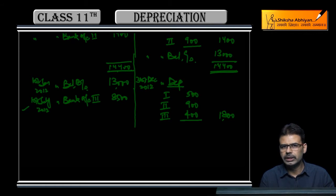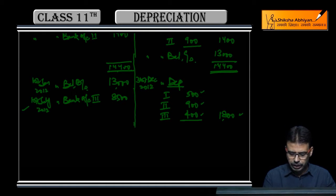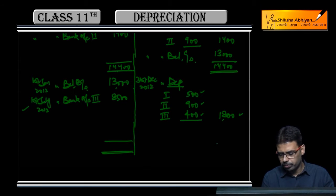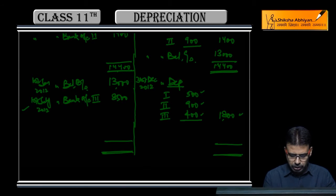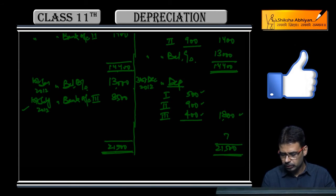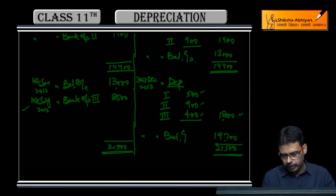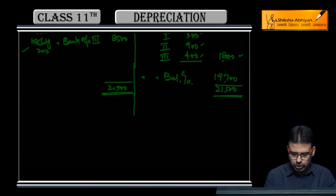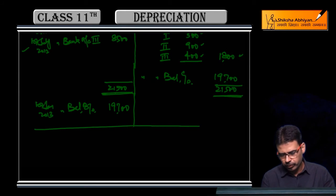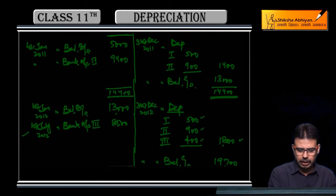Rs. 800 for full year means half-year will be Rs. 400. So this year Rs. 500 plus Rs. 900 plus Rs. 400 equals total Rs. 1,800 depreciation, and the remaining balance is Rs. 19,700. Debit side total is Rs. 21,500; from that Rs. 19,700 remains. This Balance Carried Down will be shown as Balance Brought Down on 1st January 2013. This is how the complete account is made.